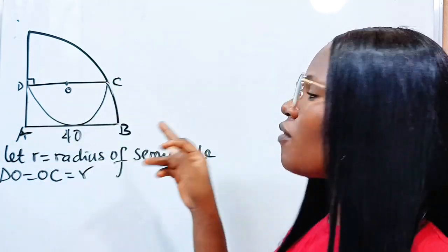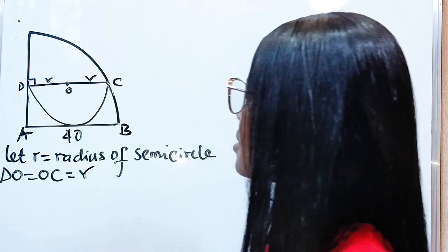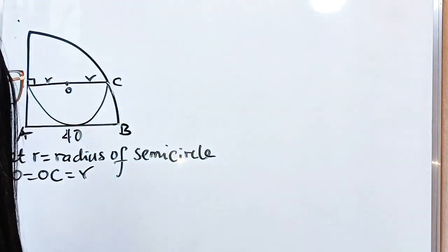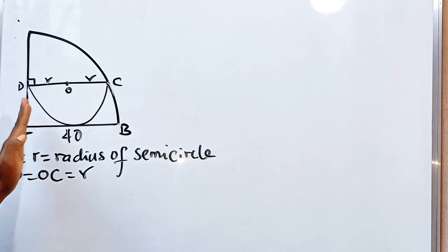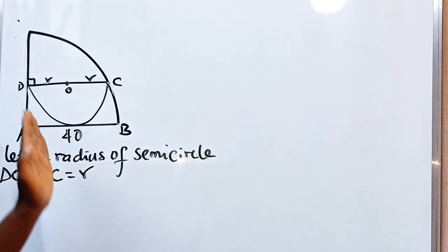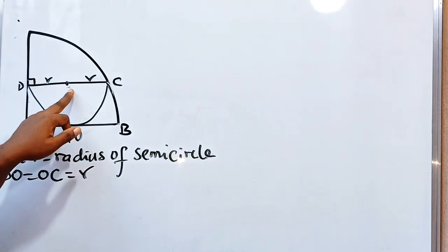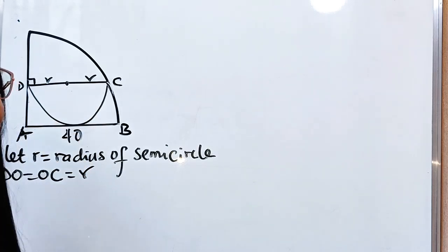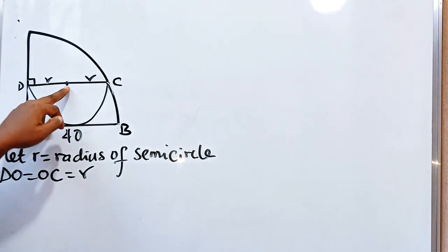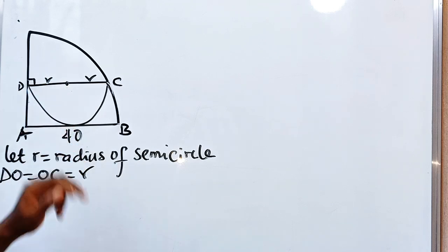Now if we join—remember that this is not drawn to scale, so my semicircle is tilted to the right, not actually in the middle. But I don't want to redraw it. If we connect O to this point of tangency, here is going to be 90 degrees.